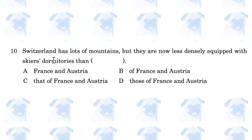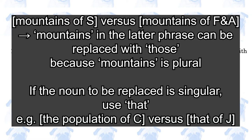Switzerland has lots of mountains, but they are now less densely equipped with skiers' dormitories than blank. The answer is D, those of France and Austria. We are comparing mountains of Switzerland and mountains of France and Austria. You can't use 'that' here because the noun 'mountains' is plural — you can only use 'that' when the noun replaced is singular, such as 'the population of China is larger than that of Japan.'